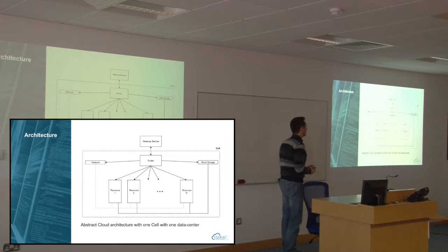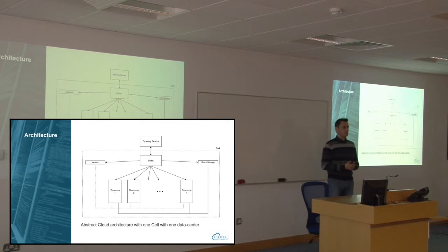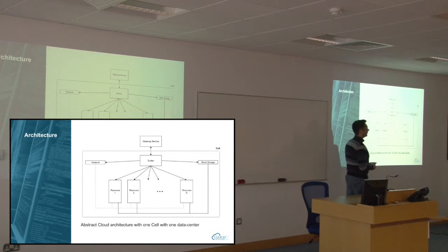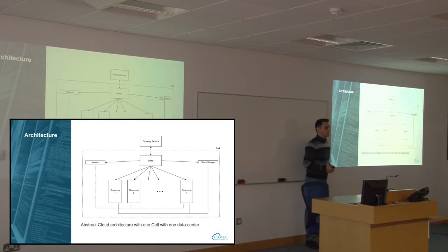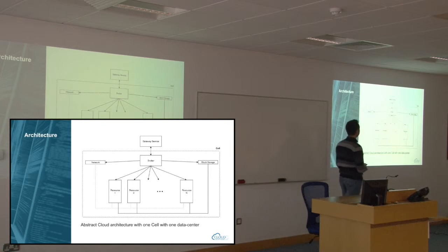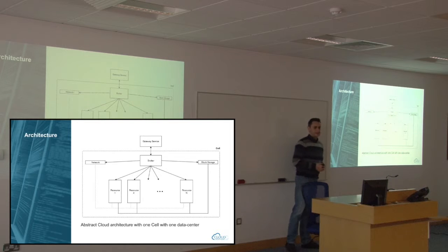This is an abstract cloud architecture. We have the gateway cell that is responsible for creating tasks and sending them to the cells to be executed on the hardware. Each cell consists of a broker that is responsible for retrieving tasks from the gateway service and assigning the hardware that is going to execute the task. We also have some network and storage components that measure the utilization of network and storage for each application.